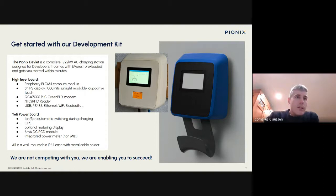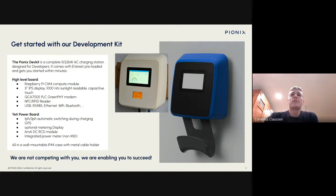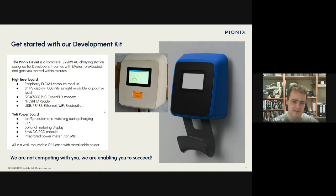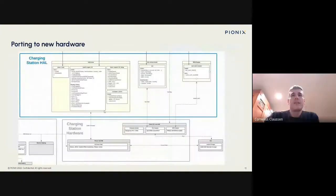On the power side there's a special Yeti power board developed for this box, which supports cool features not normally found, such as switching between one phase and three phases even during a charging session — very handy for energy management when solar panels drop below 4.2 kilowatts. It also has a GPS receiver, uncommon in charging stations, but useful for fleet deployments: if one of a thousand chargers is broken and nobody logged its position, GPS gives you the real location. There are RCDs integrated and all safety features. It will be commercially available probably in summer, though it's a development kit, not a production wall box.